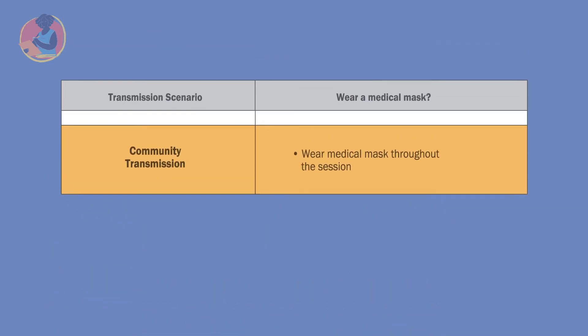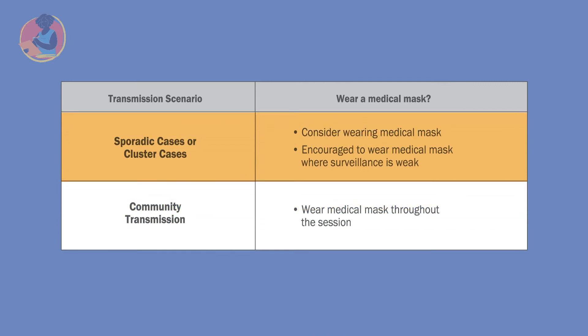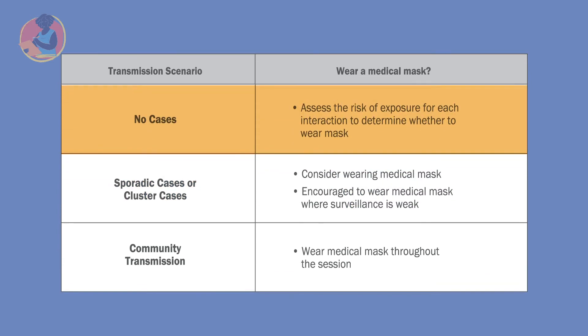Is transmission sporadic or clustered? If so, health workers can consider wearing medical masks. In areas where surveillance is weak, because of the possibility of unknown community transmission, health workers are encouraged to wear medical masks throughout the immunization session. If there are no cases of COVID-19, health workers can assess the risk of exposure from each individual patient interaction and determine whether a face mask may be appropriate.